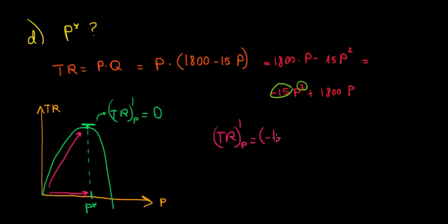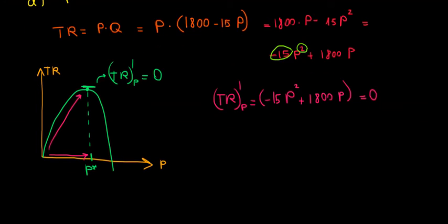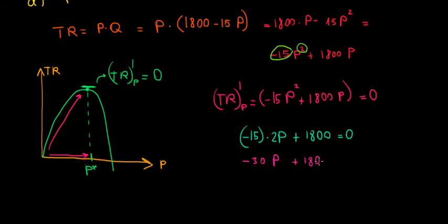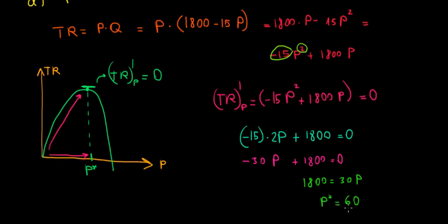Now let's take the derivative. The total revenue derivative with respect to price: d/dP of (−15P² + 1800P) = 0. The derivative of −15P² is −30P, plus the constant 1800 equals zero. So: −30P + 1800 = 0, which gives us 1800 = 30P, and therefore the optimal price is 1800 divided by 30, which equals 60 euros.